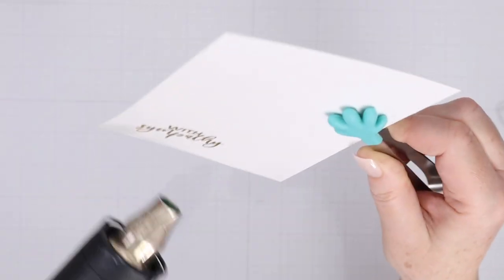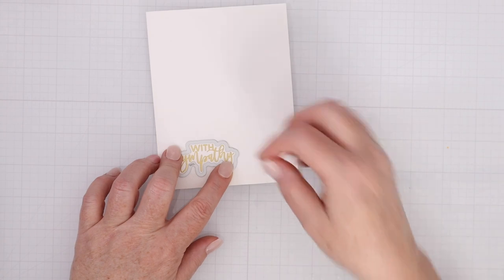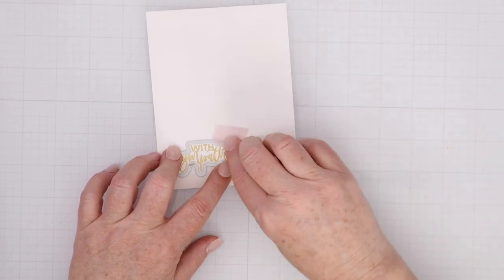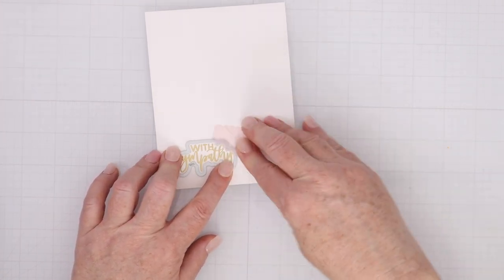Again, I have my little helping hands to hold that in place, and let me heat set it, and then I'm going to use that pixie tape to hold the die in place so that I can cut it out.